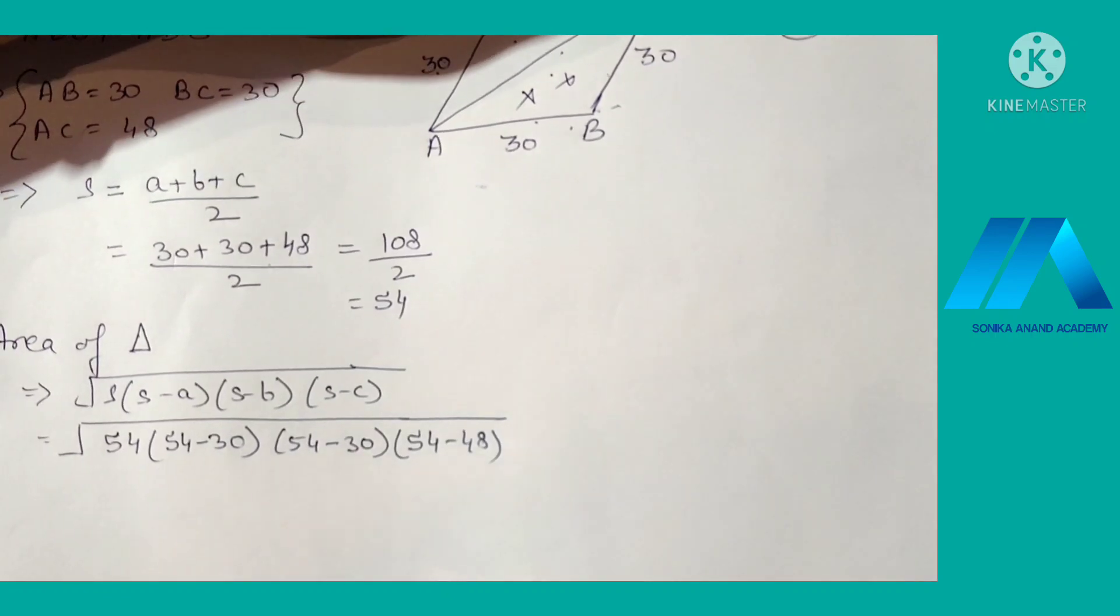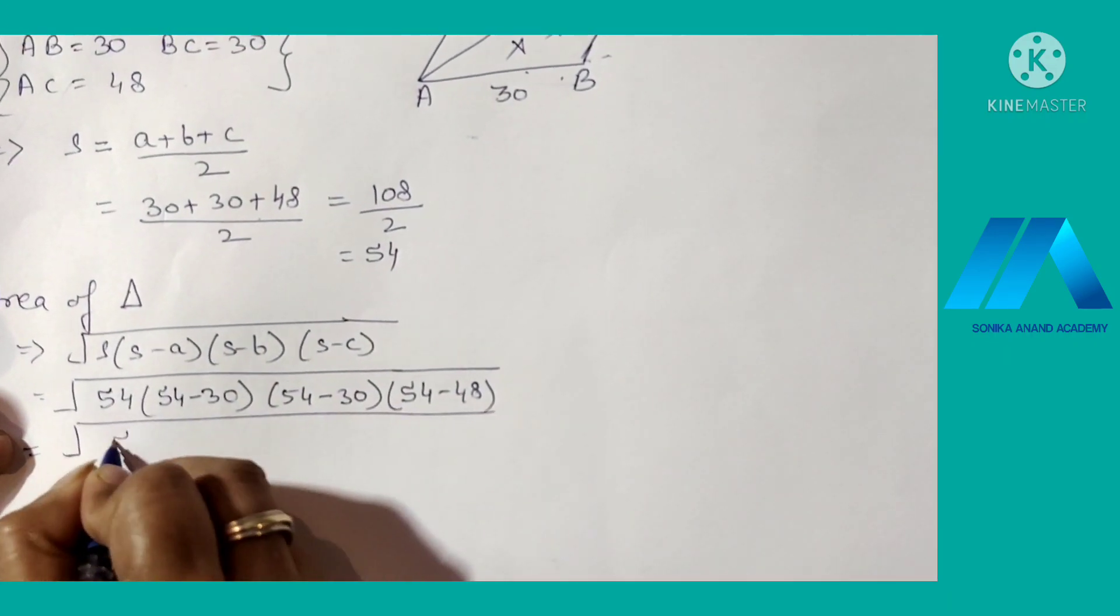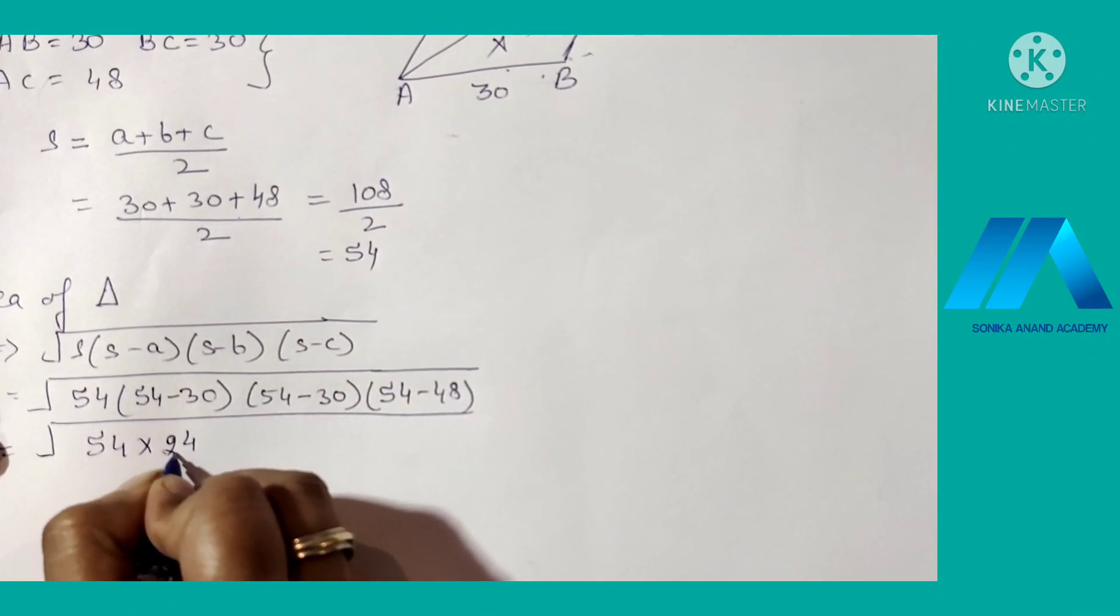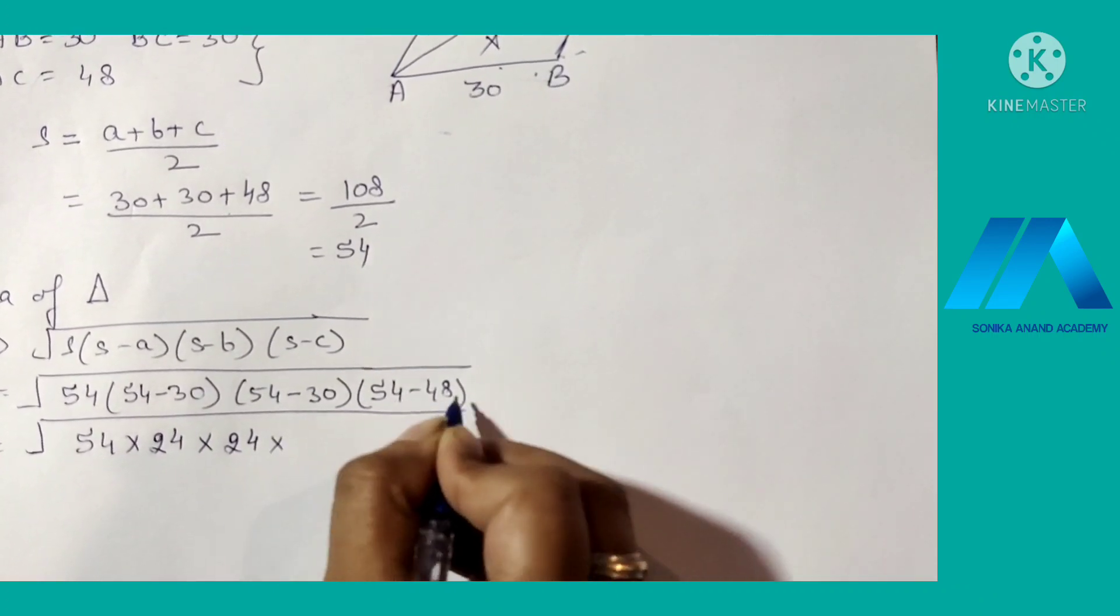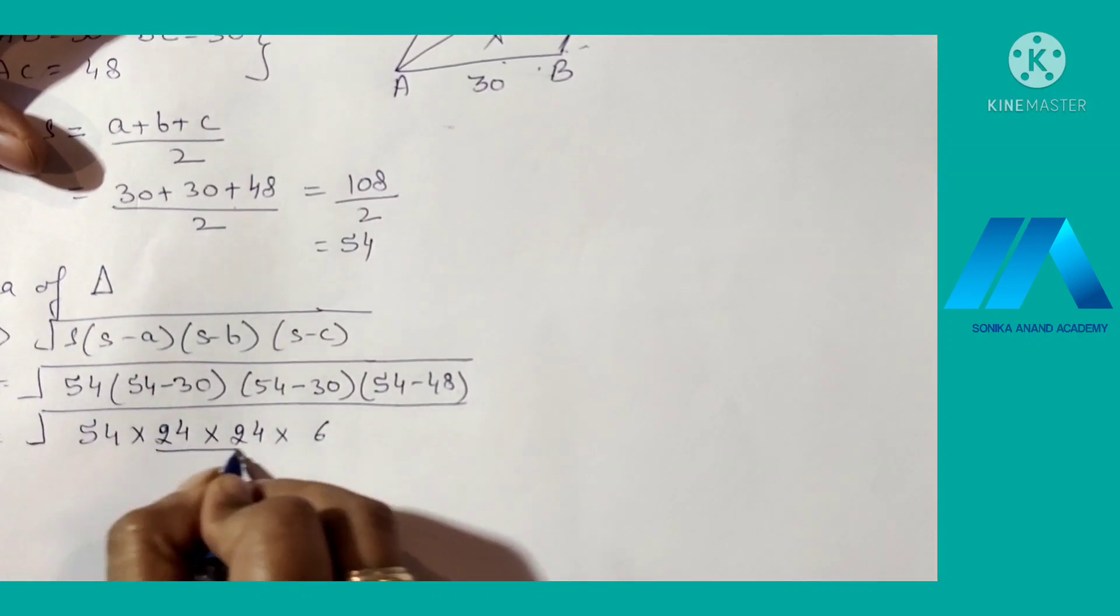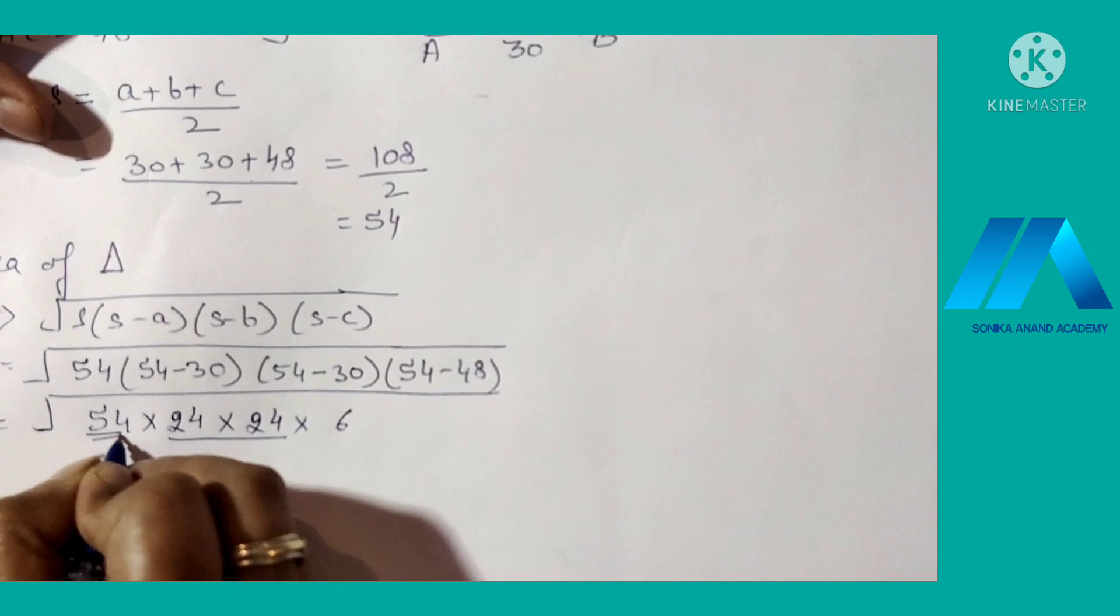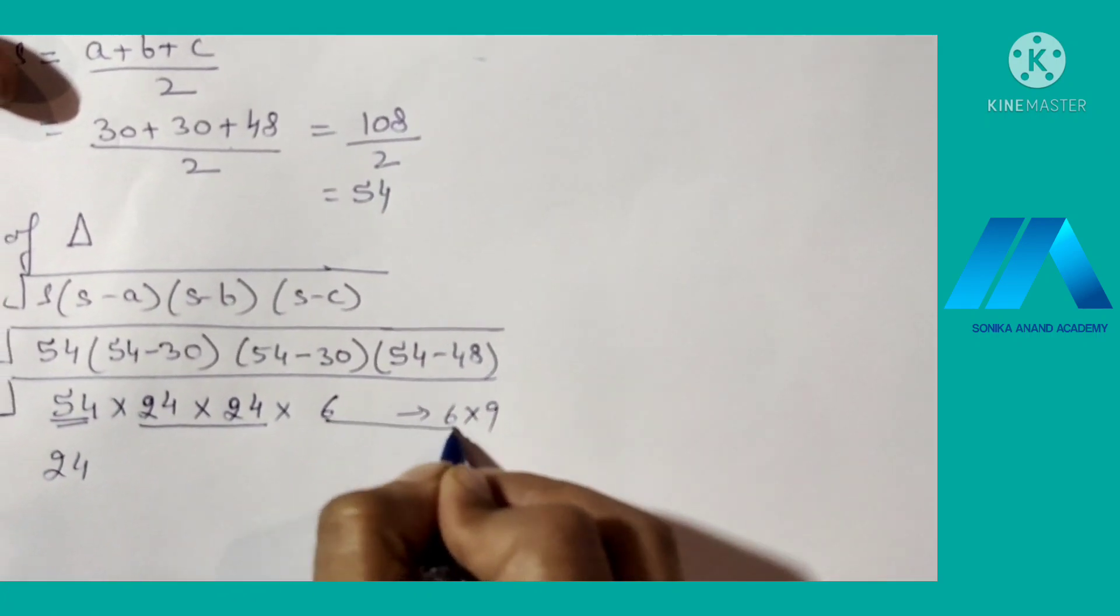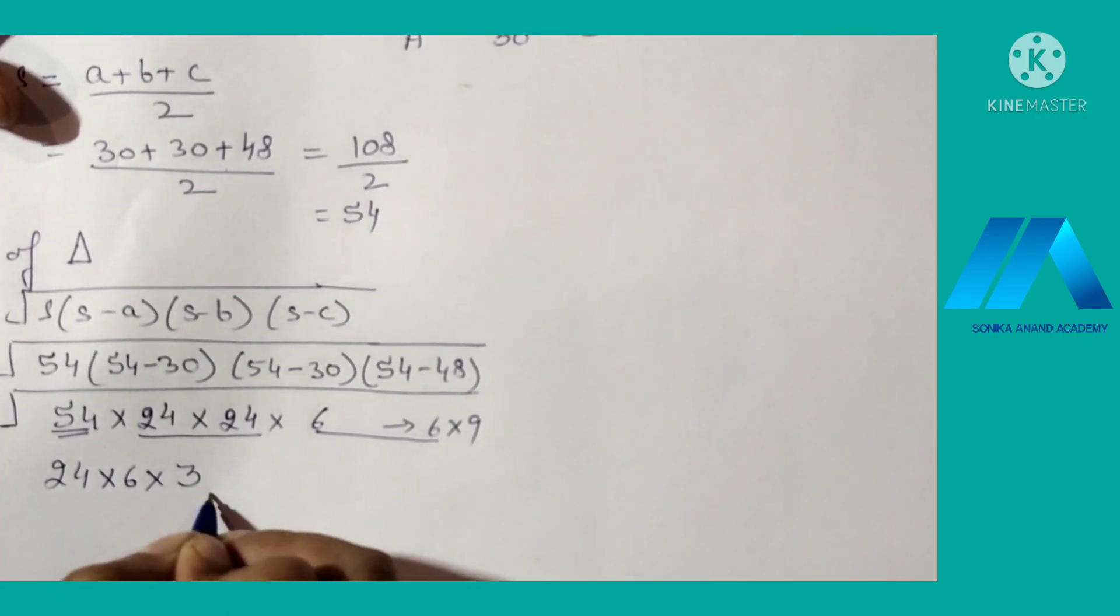Now we solve all these values in order to get the result. That is 54 into, after subtracting we get 24, here we get 24, and again we get 6. Now this is 24 times 24, we can take it outside, and 54 we can resolve it into 6 into 9. So ultimately we get the factor of 6 and for the 9 we get 3. So this is the area of the triangle.